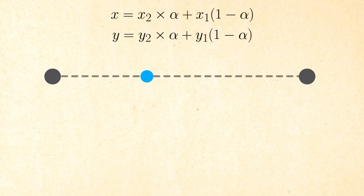The position of this point is controlled by a parameter alpha. When alpha is equal to one, the second term of each equation becomes zero and the position is set to the end of the segment. In other case, where alpha is zero, then the first term becomes zero and therefore the position is set to the beginning of the segment.